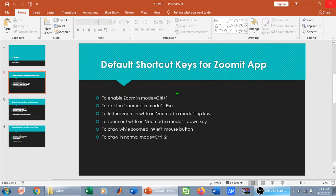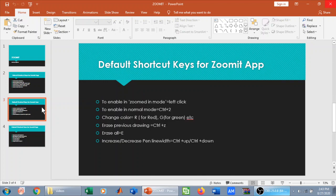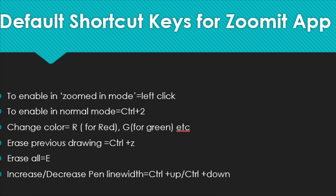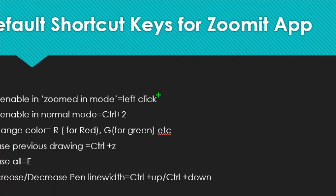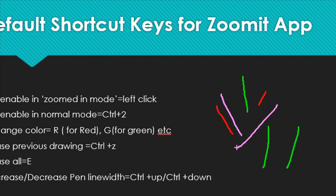Now let's talk about the pen. To enable annotation in normal mode, press Ctrl+3. Once in annotation mode, you can change the pen color. To change to red press R, to change to green press G, and to change to pink press P. In this way you can change to whatever color you like.